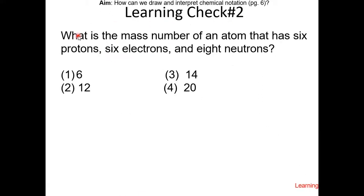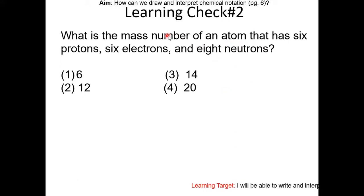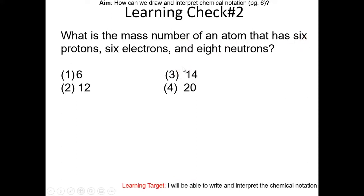Learning check number 2: what is the mass number of an atom that has 6 protons, 6 electrons, and 8 neutrons? Pause the video and try to do this yourself. Mass number equals protons plus neutrons, so we have 6 plus 8, which is 14. That's choice 3.